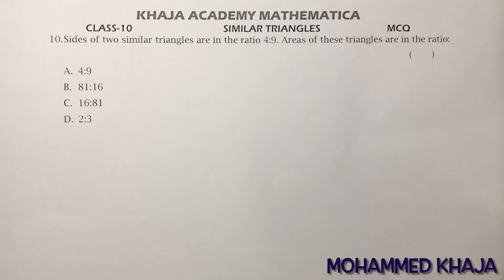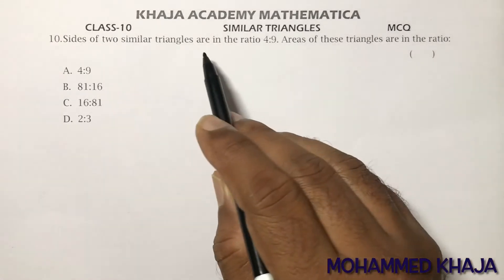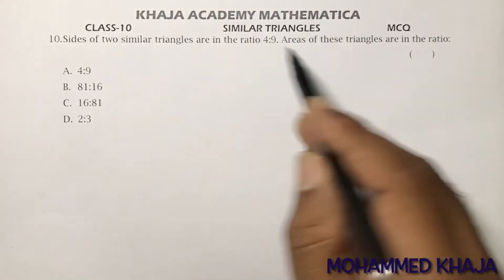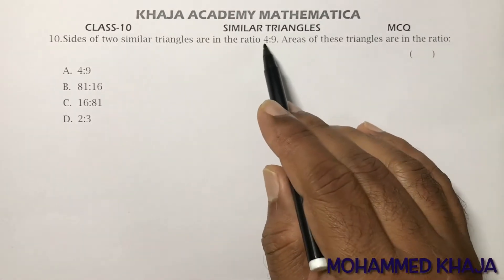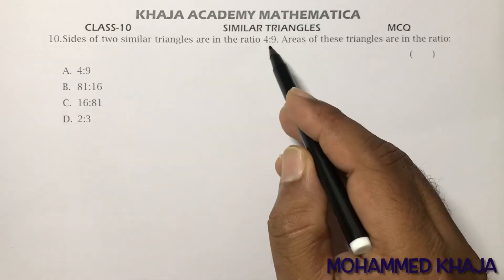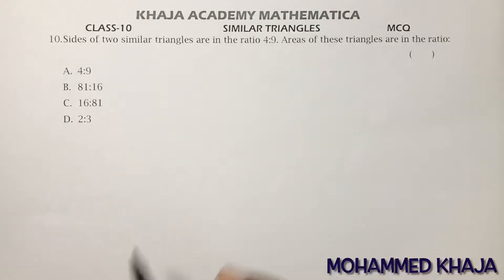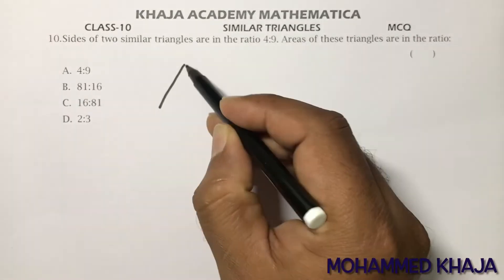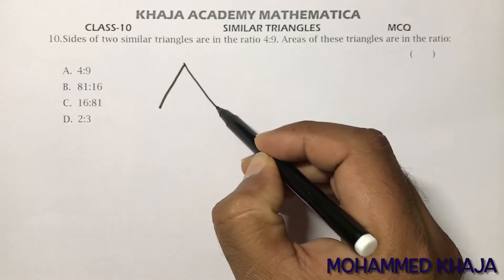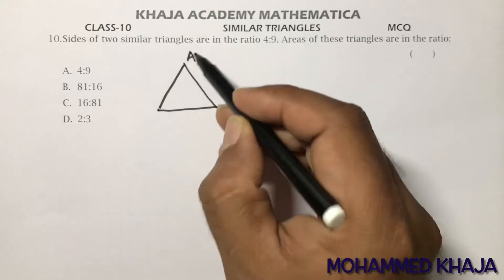Sides of two similar triangles are in the ratio 4:9. To find the areas, just square the sides ratio to get the answer. The answer is 16:81. I'll explain according to the area theorem.